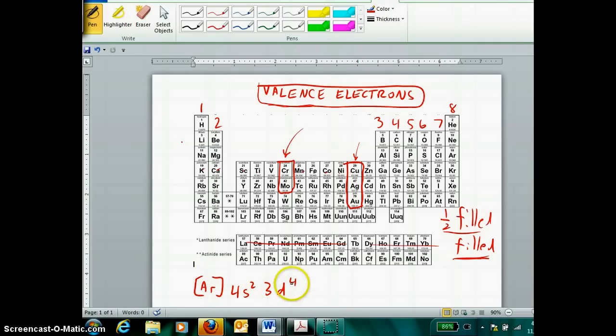But by simple promotion of an electron to a slightly higher energy, instead you have argon core, 4s1, 3d5. Half-filled, half-filled, full, better than full, full, and fractionally filled, 4 tenths two-fifths full. So yes, this is the actual ground state configuration for chromium.